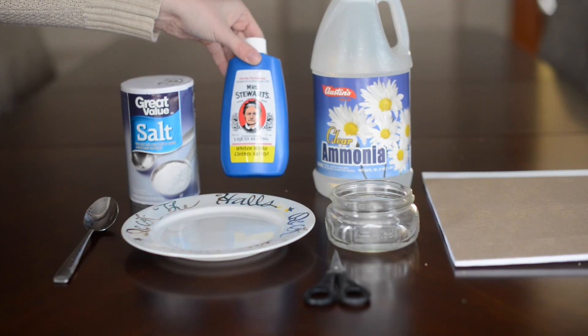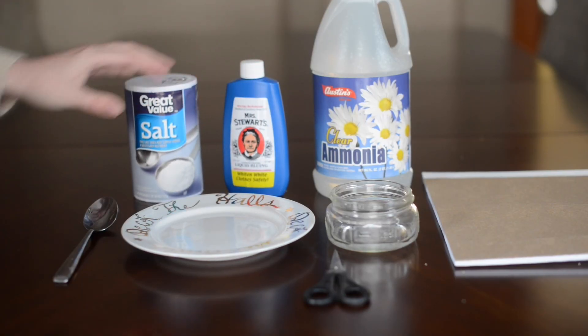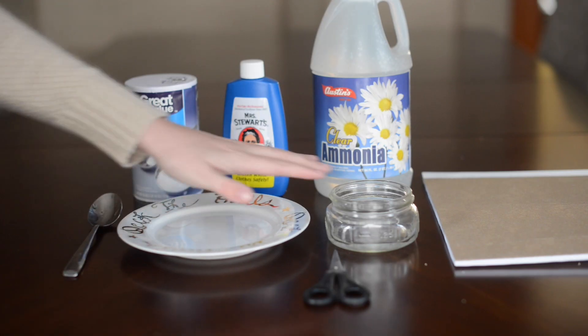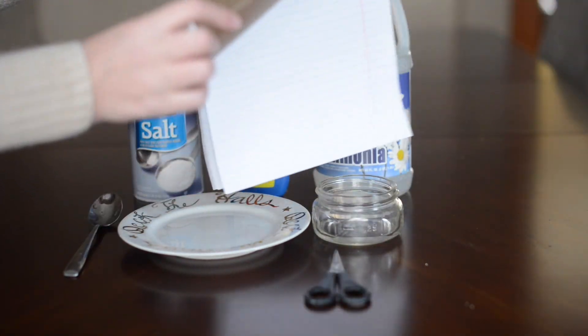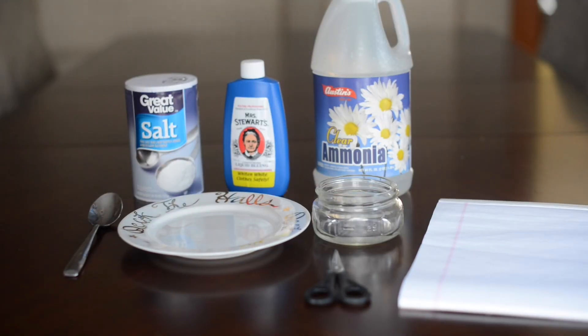What you need for this is ammonia, bluing, salt, a measuring spoon, a dish, and then another dish to mix in. And you'll want thin cardboard like the back of a notebook.